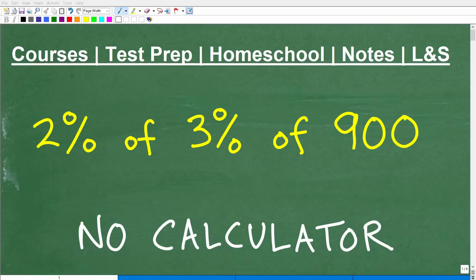Okay, let's talk about percent. We're actually going to do this problem without the aid of a calculator. The problem is 2% of 3% of 900. So how do we do this problem? Well, if you're not quite sure that you could do this without a calculator, we'll use a calculator and see if we can get the right answer.